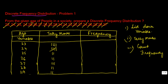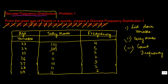We've got 4 against 23, 5 against 24, 2 against 25, 2 against 26, 3 against 27, 2 against 28, and 2 against 29. By this means we are able to form a discrete frequency distribution.